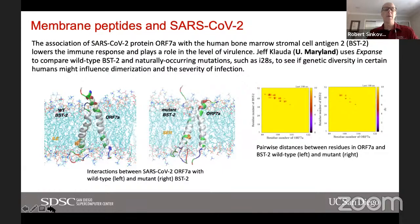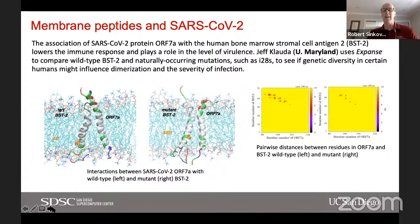Returning to pandemic work on membrane peptides and SARS-CoV-2 — this is work by Jeffrey Kohlda at the University of Maryland. He investigated a specific problem: when the SARS-CoV-2 protein named ORF7a interacts with human bone marrow stromal cell antigen 2, or BST2, it lowers the immune response and increases the virulence of the virus. He used Expanse to compare wild-type BST2 with naturally occurring mutations to see if this genetic diversity might influence the dimerization of BST2 and therefore the severity of infection.